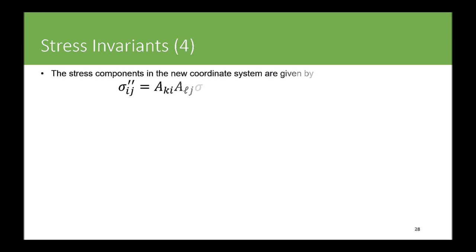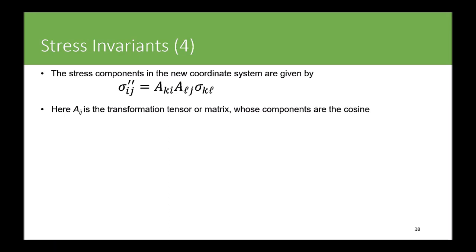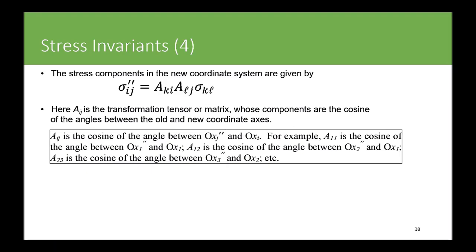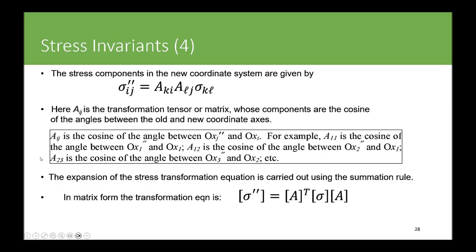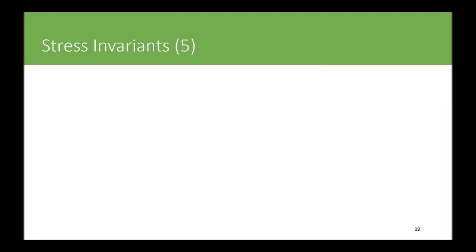To obtain stress components in the new coordinate system you use a transformation matrix based on direction cosines — the cosines of angles between the old and new coordinate axes. This rotation or transformation tensor is a second-order tensor. You multiply the actual stress tensor (in the original coordinate system) by these transformation matrices to get the updated stress tensor in the new coordinate system. The components of stress at a point therefore depend on the orientation of the coordinate axes used.